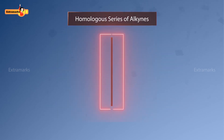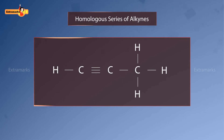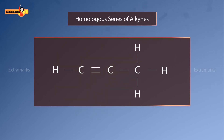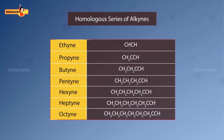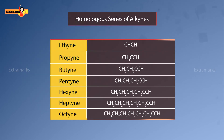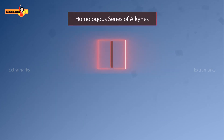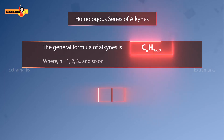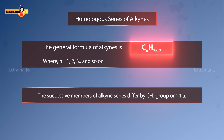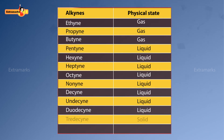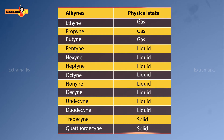Members of the homologous series of alkynes are characterized by the presence of at least one carbon-carbon triple bond in their molecules. The first homolog of this series is ethyne, as a single-carbon alkyne does not exist. Other members are propyne, butyne, pentyne, hexyne, heptyne, octyne, and so on. The general formula of alkynes is CₙH₂ₙ₋₂. Successive members of the alkyne series differ by a CH₂ group, or 14u.